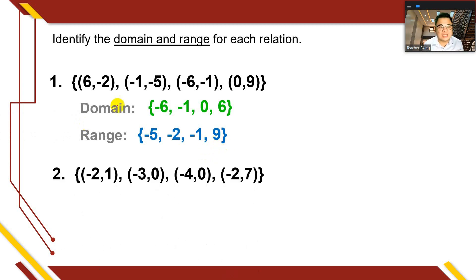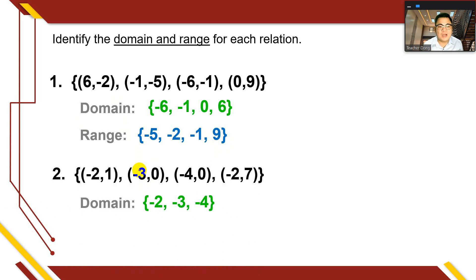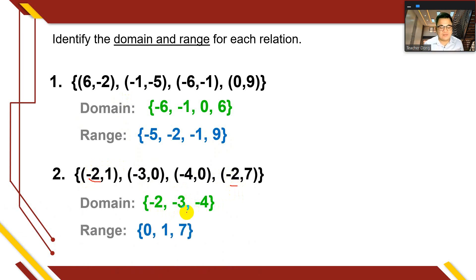For number 2, we have the set: (-2, 1), (-3, 0), (-4, 0), (-2, 7). All the first numbers are the domain or x-values. Remember, when writing the domain or range, if there's a repeated element, just write it once. Here, -2 was used twice, so we write it once. The domain is: -2, -3, and -4. For the range, we have: 0, 1, and 7 — also writing 0 only once.